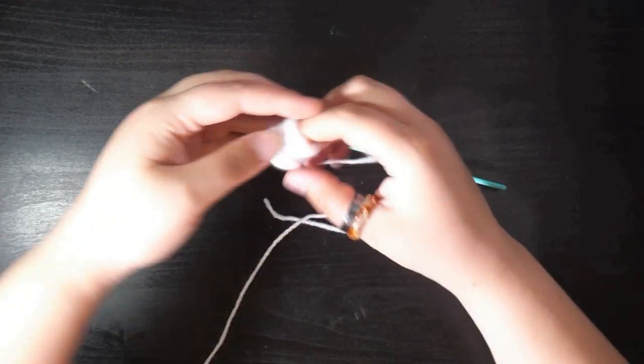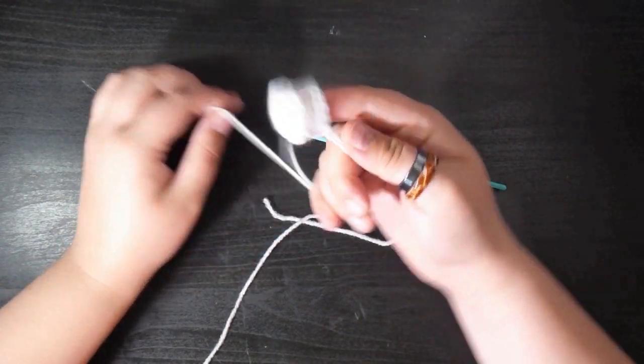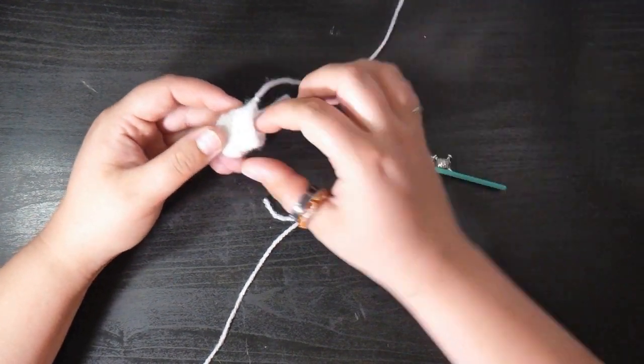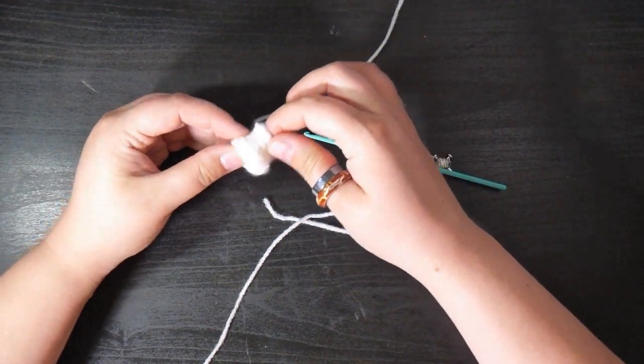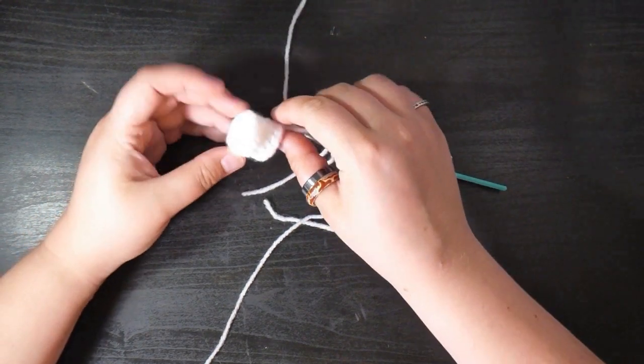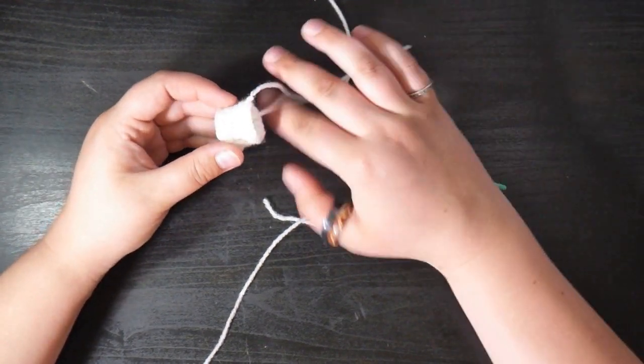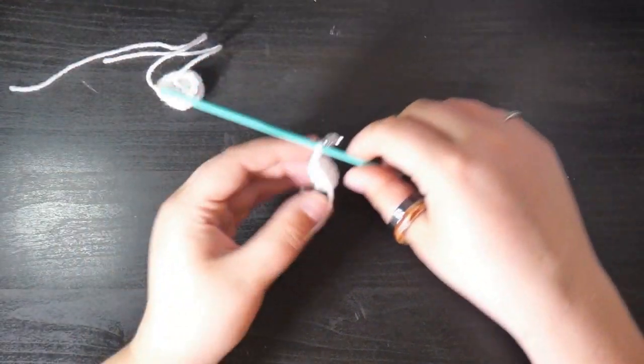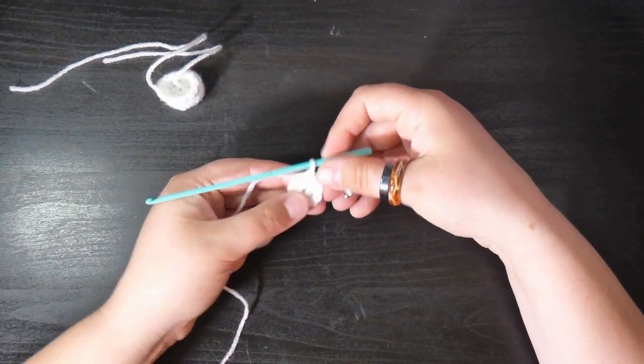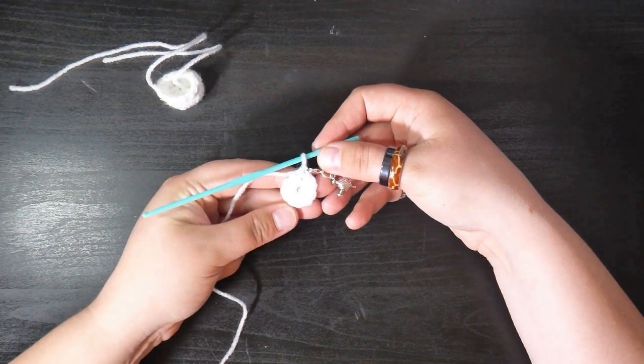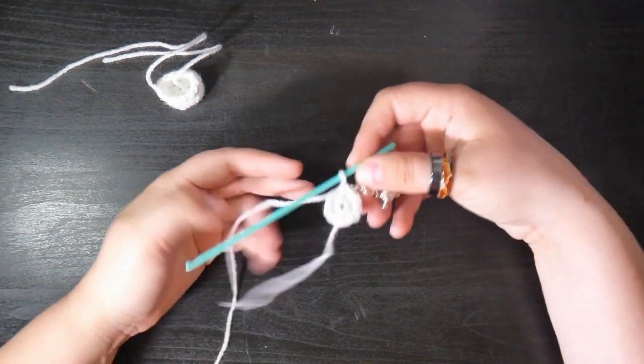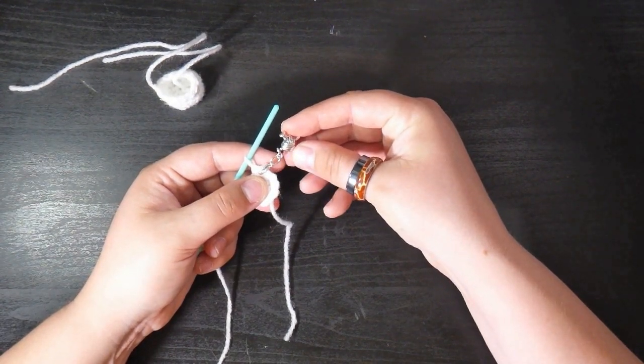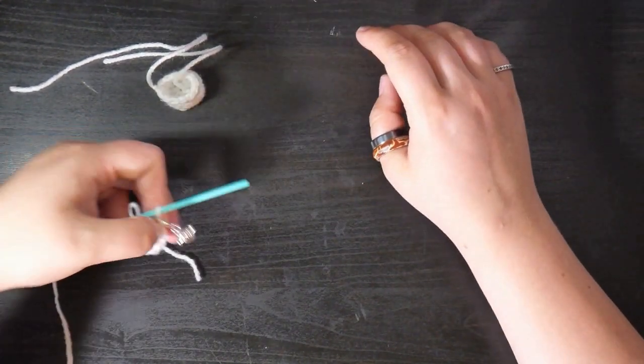So this is what your leg will look like when it's finished. I've made one, obviously you need to make two. It's a very similar process to how we made the wings and how we made the head and body. So I've already started rounds one and two of the leg. I've got my stitch marker in the final stitch of the round. So I'm ready to start round three.